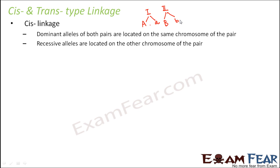When we say linked genes, that means there is a possibility that these two different genes are basically located on the same chromosome. Now when we talk about cis linkage, chromosomes also exist in pairs. These pairs of chromosomes are called homologous chromosomes. You receive one homologue from your mother, and you receive the other homologue from your father.